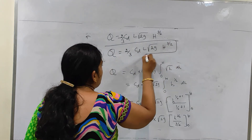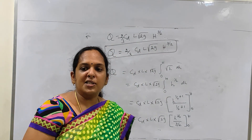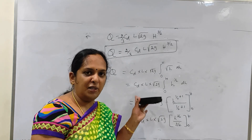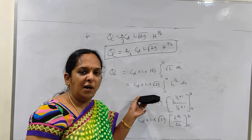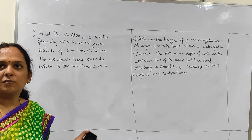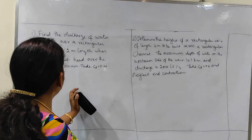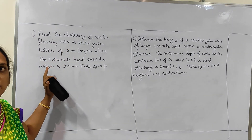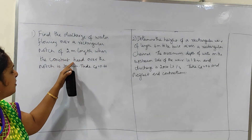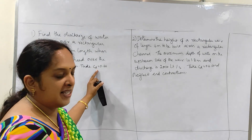So the equation for the rectangular notch or rectangular weir is Q = (2/3) × CD × L × √(2g) × H^(3/2). This equation is the same for both the notch and the weir. Now we will go with the problems.